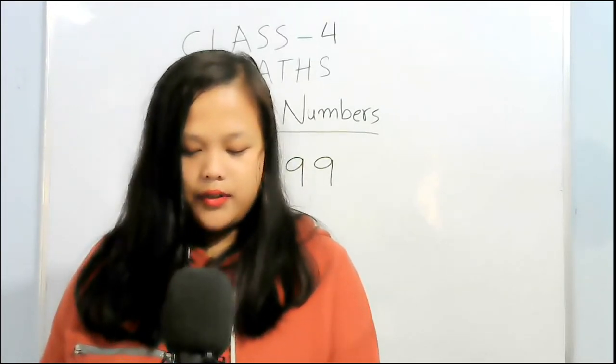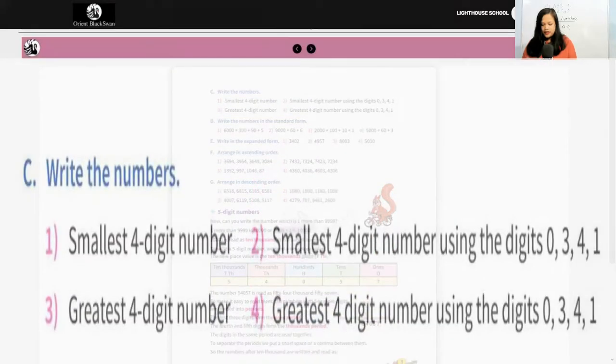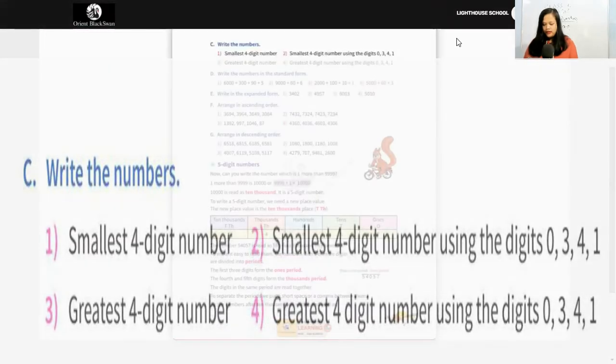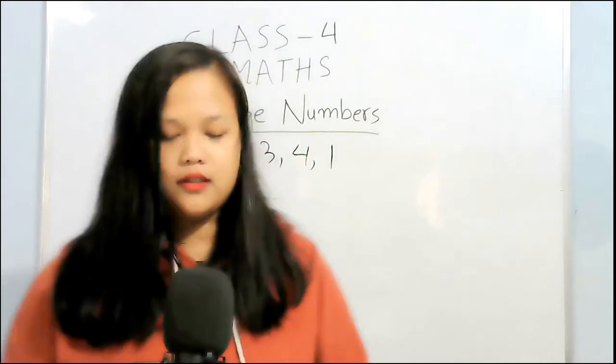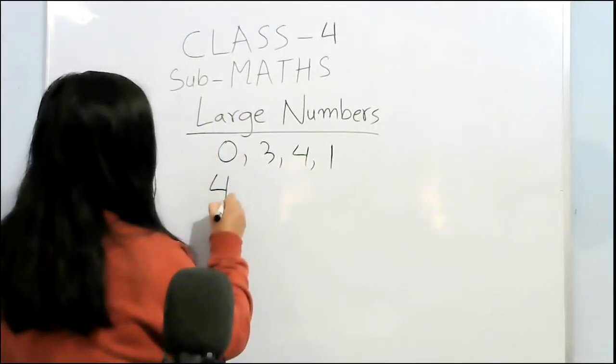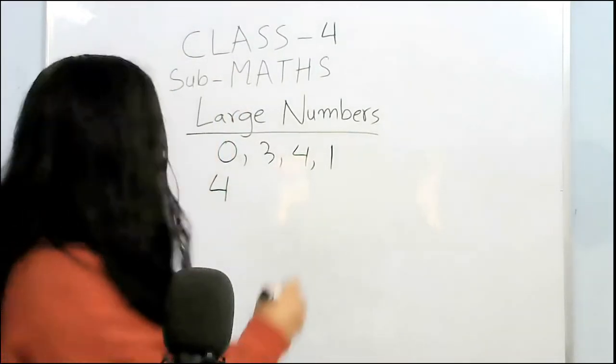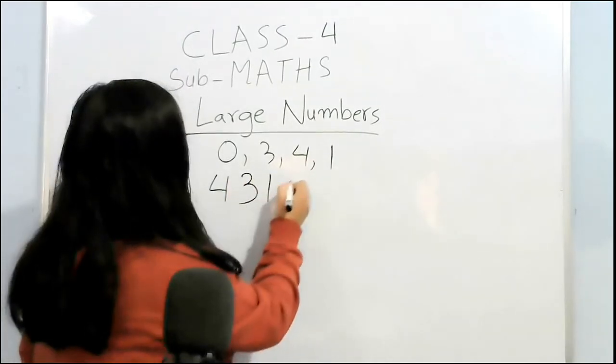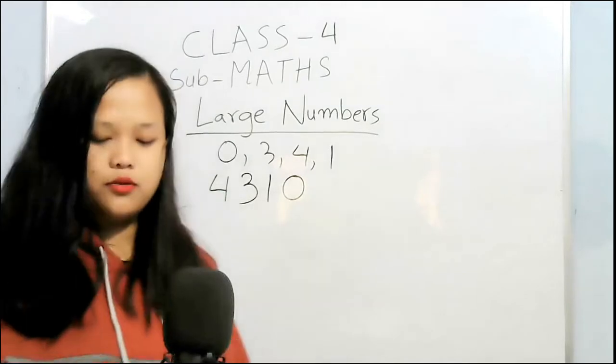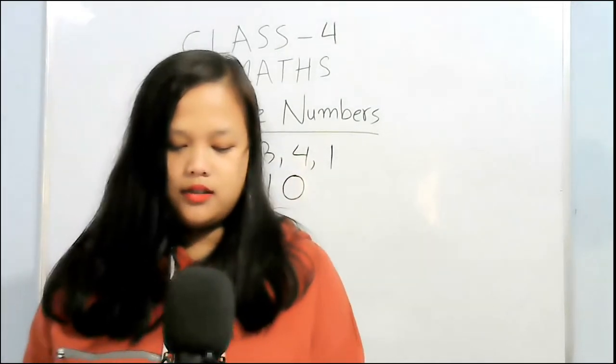Next is 4. Greatest 4-digit number using the digits 0, 3, 4, 1. From here the greatest is 4. And next is 3. Next is 1. It should be 4, 3, 1, 0.